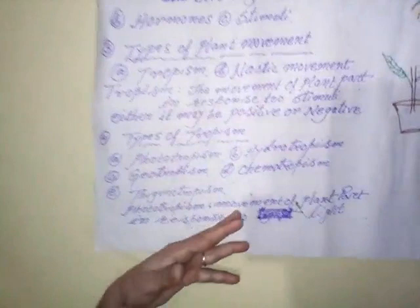Now I am discussing only phototropism. Movement of a plant part in response to light is known as phototropism. If the plant is kept near the side of a window, it shows positive phototropism. On the other hand, the root of the plant moves away from sunlight and shows negative phototropism.